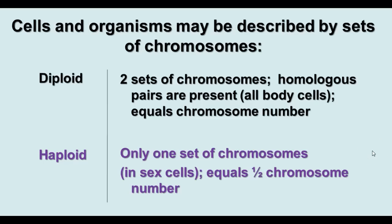When we talk about multicellular organisms, we talk about the fact that they are either diploid or haploid. Diploid means you have two sets of chromosomes — one copy of each chromosome from each parent — and the homologous pairs are present in the body cells. In humans, that's 46 total chromosomes, or 23 pairs. Haploid cells have only half the number of chromosomes and are found in sex cells like sperm and egg cells. If the chromosome number wasn't cut in half, offspring would have twice the chromosomes of the parent and would not belong to the same species.